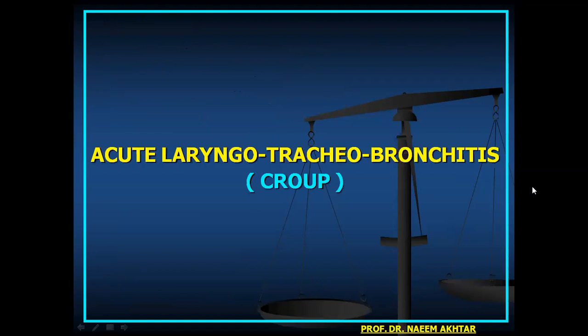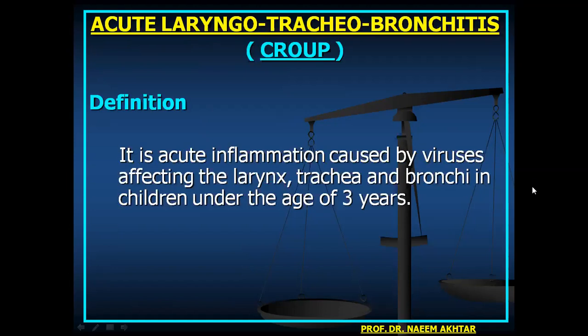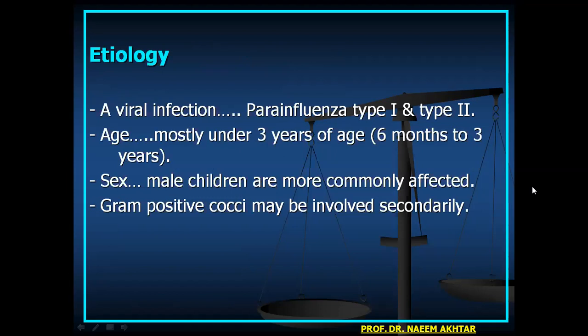The next important inflammatory disease is acute laryngotracheobronchitis. It is acute inflammation caused by viruses affecting the larynx, trachea, and bronchi in children under the age of 3 years. Etiology: usually para-influenza type 1 and type 2. Age: usual range is 6 months to 3 years. Male children are more commonly affected. Gram-positive cocci may be involved secondarily.